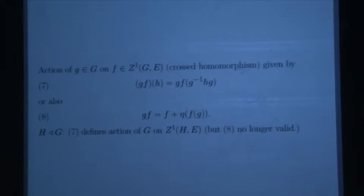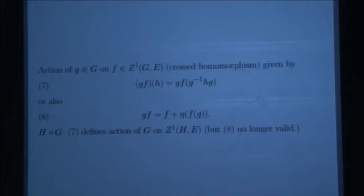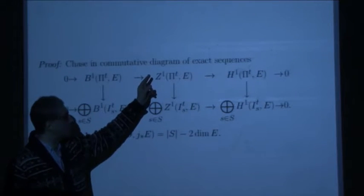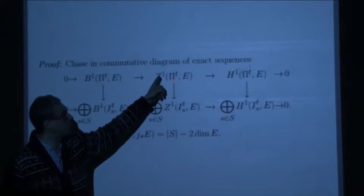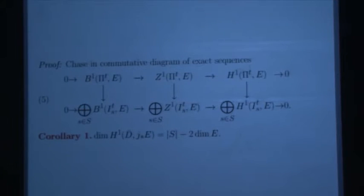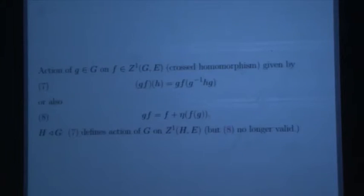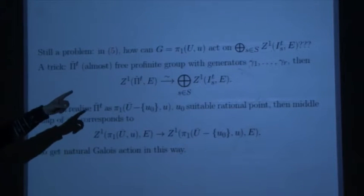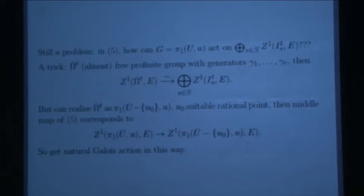This is not quite sufficient to compute yet, because we need a Galois action on the term that's a direct sum of Z^1 of inertia groups. How can G act on this direct sum of Z^1(I_s, E)? That's the next step.